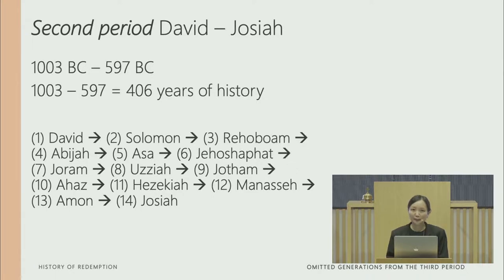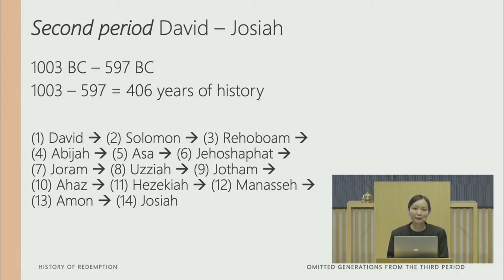The second period is from David to Josiah, which is the second deportation to Babylon — from 1003 BC to 597 BC, giving us 406 years of history within the second period. These are the names of the 14 generations, with David as the first and Josiah as the 14th generation.